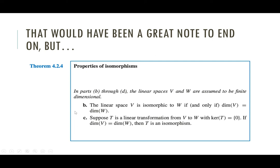Next: suppose we have a linear transformation from V to W where the kernel is zero. Kernel equals zero should send bells ringing — if you have an n by n matrix where the kernel is zero, then it's invertible. Something similar is going on here: if you have a linear transformation between abstract vector spaces where the kernel is zero, and the spaces have the same dimension — dimension n to dimension n — then the linear transformation is an isomorphism, which is a linear transformation that's invertible.